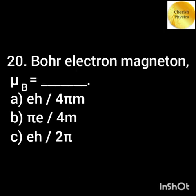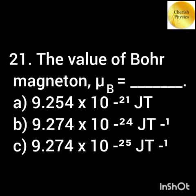The equation of Bohr electron magneton mu_b is equal to [formula]. The value of Bohr magneton mu_b is equal to [value].